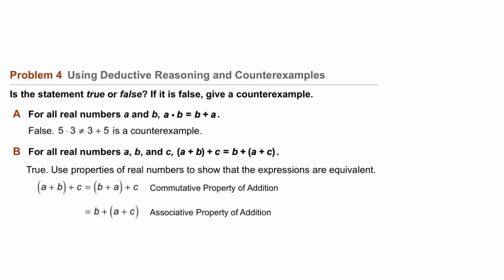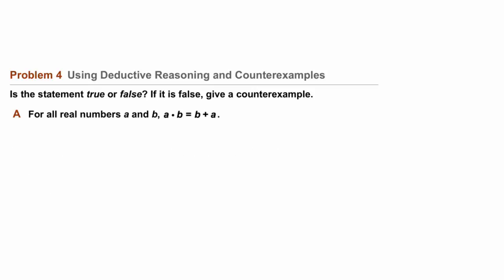Problem four, using deductive reasoning and counterexamples. Is the statement true or false? If it is false, give a counterexample. A says, for all real numbers A and B, A times B equals B plus A.